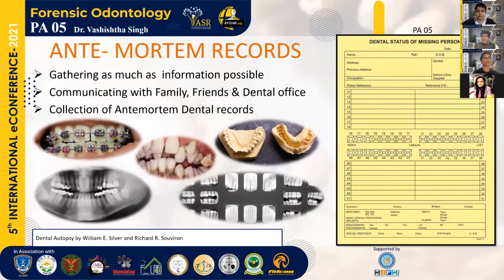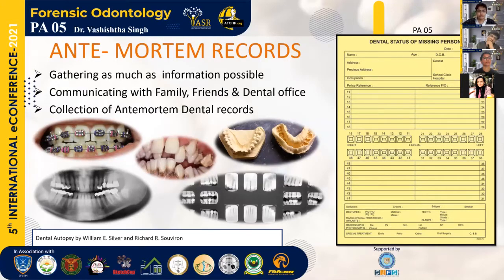Coming on to antemortem records — we gather as much information as possible. Communicating with family members, friends and dental offices can give us a wealth of information about the person. Antemortem records can be collected in the form of x-rays, dental charts, photographs and plaster models if the person has ever undergone any orthodontic treatment. The Interpol antemortem odontogram is shown here, where all the information is filled in, providing us with a dental status of the missing person.